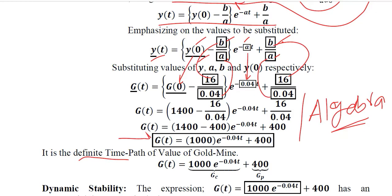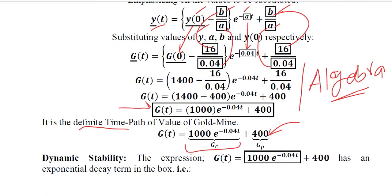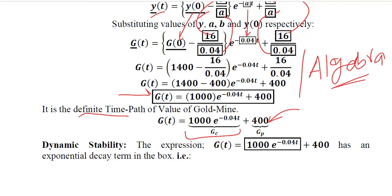In this time path, this is the complementary function and this is the particular integral. Now we can observe the dynamic stability, and for that we are expecting an exponential decay because the negative sign is there in the exponent.